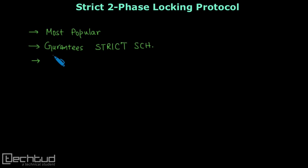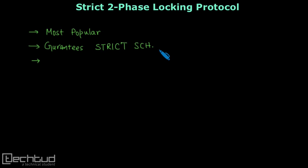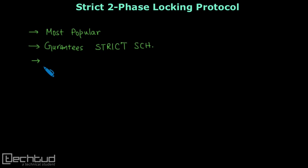In strict two-phase locking protocol, this locking protocol is most popular because it is easy to implement and it also guarantees a strict schedule. That is because of the additional rule which we implement here. However, it also has some flaws which we will see.